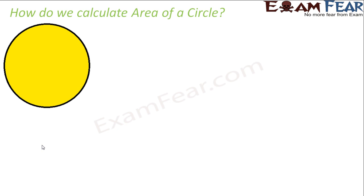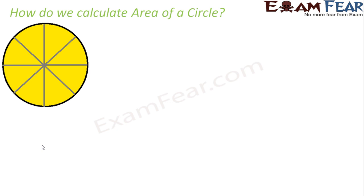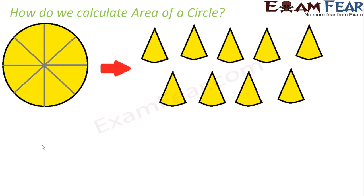Let's divide this circle into eight equal parts, or eight equal sectors — like how you cut slices out of a pizza. If you have a pizza and cut eight slices out of it, we are doing the same thing here. Divide the circle into eight equal sectors, making sure each part is equal to the other. You cut them to get sectors, giving you a total of eight pieces.